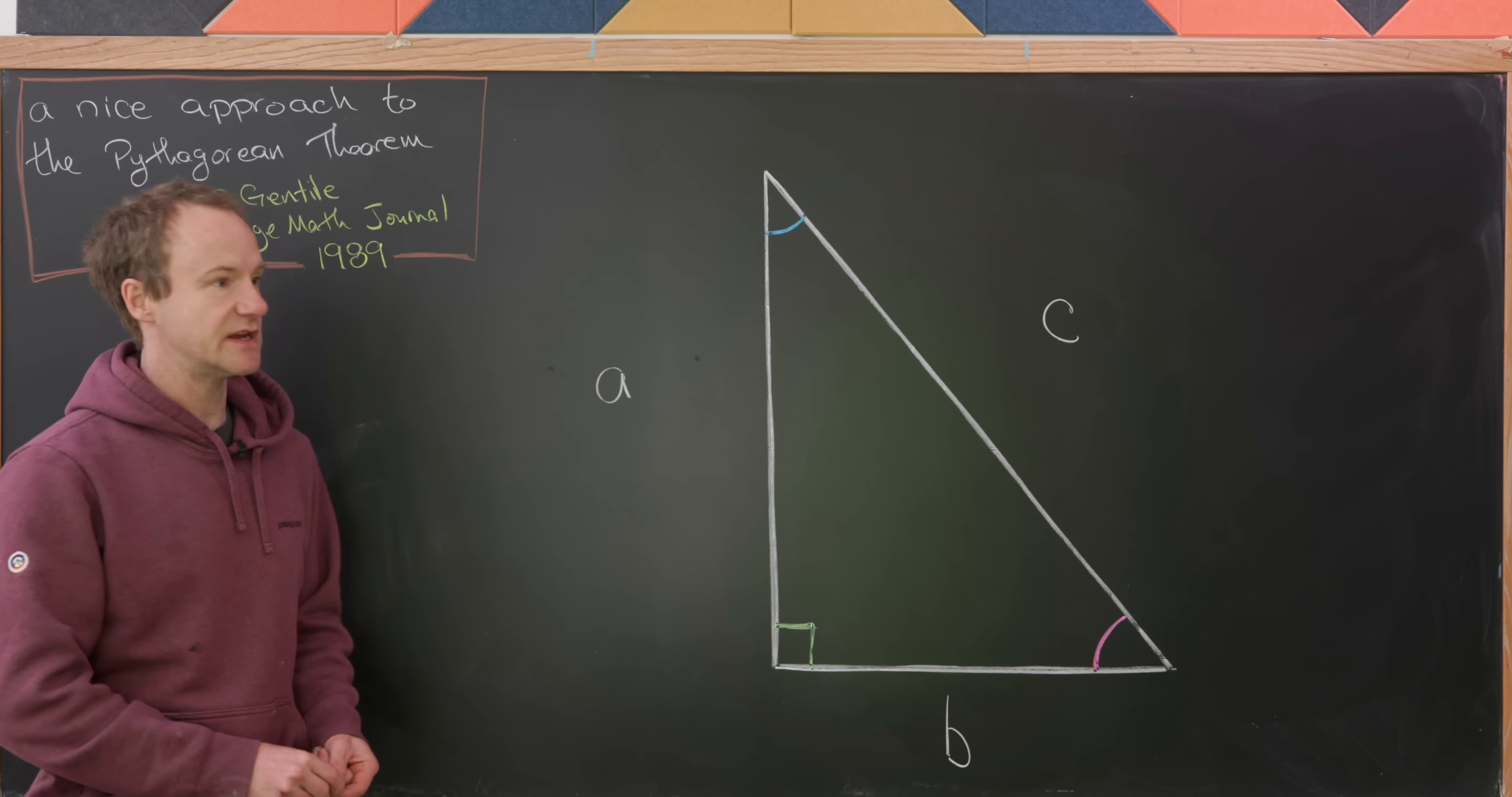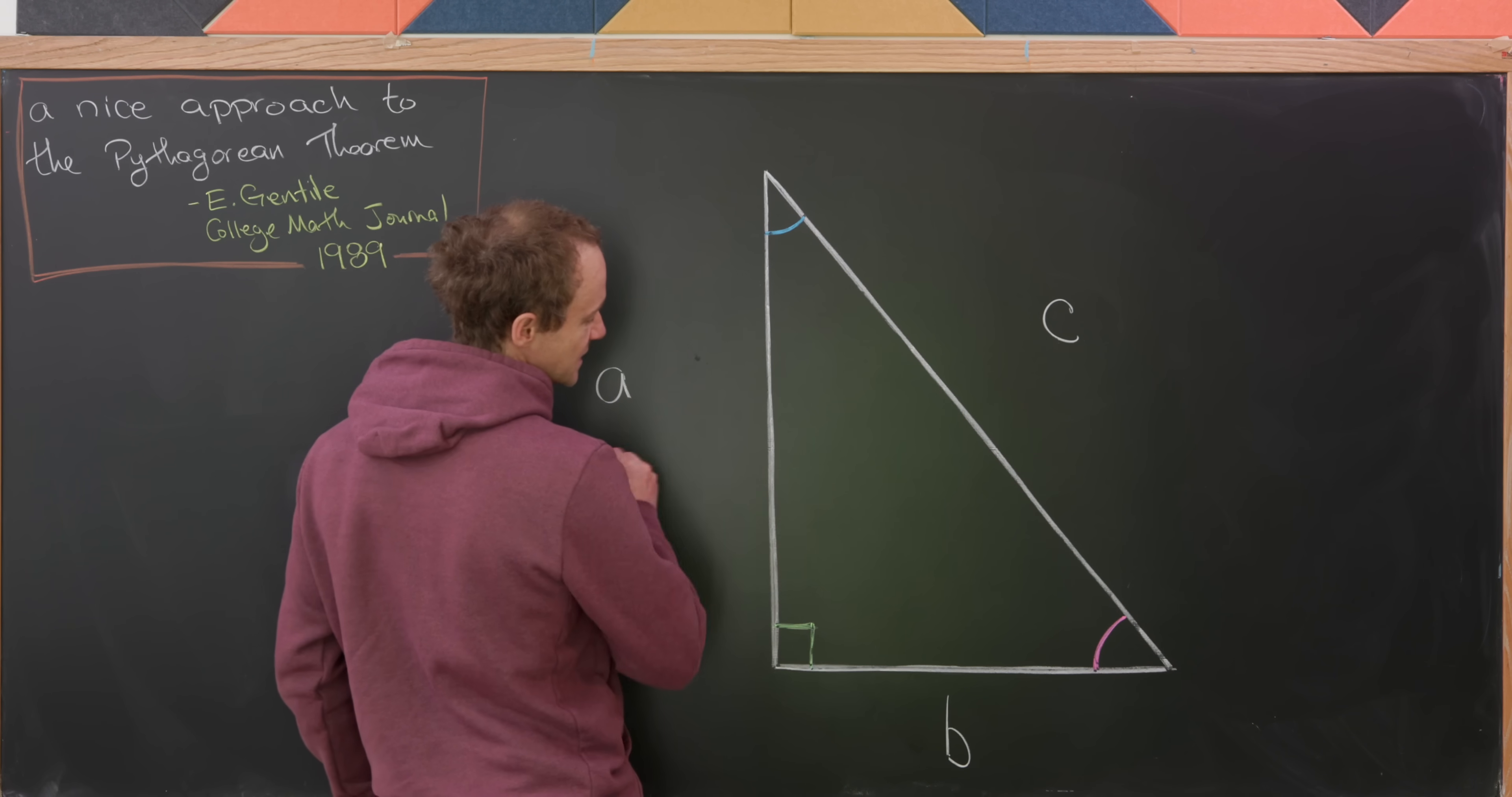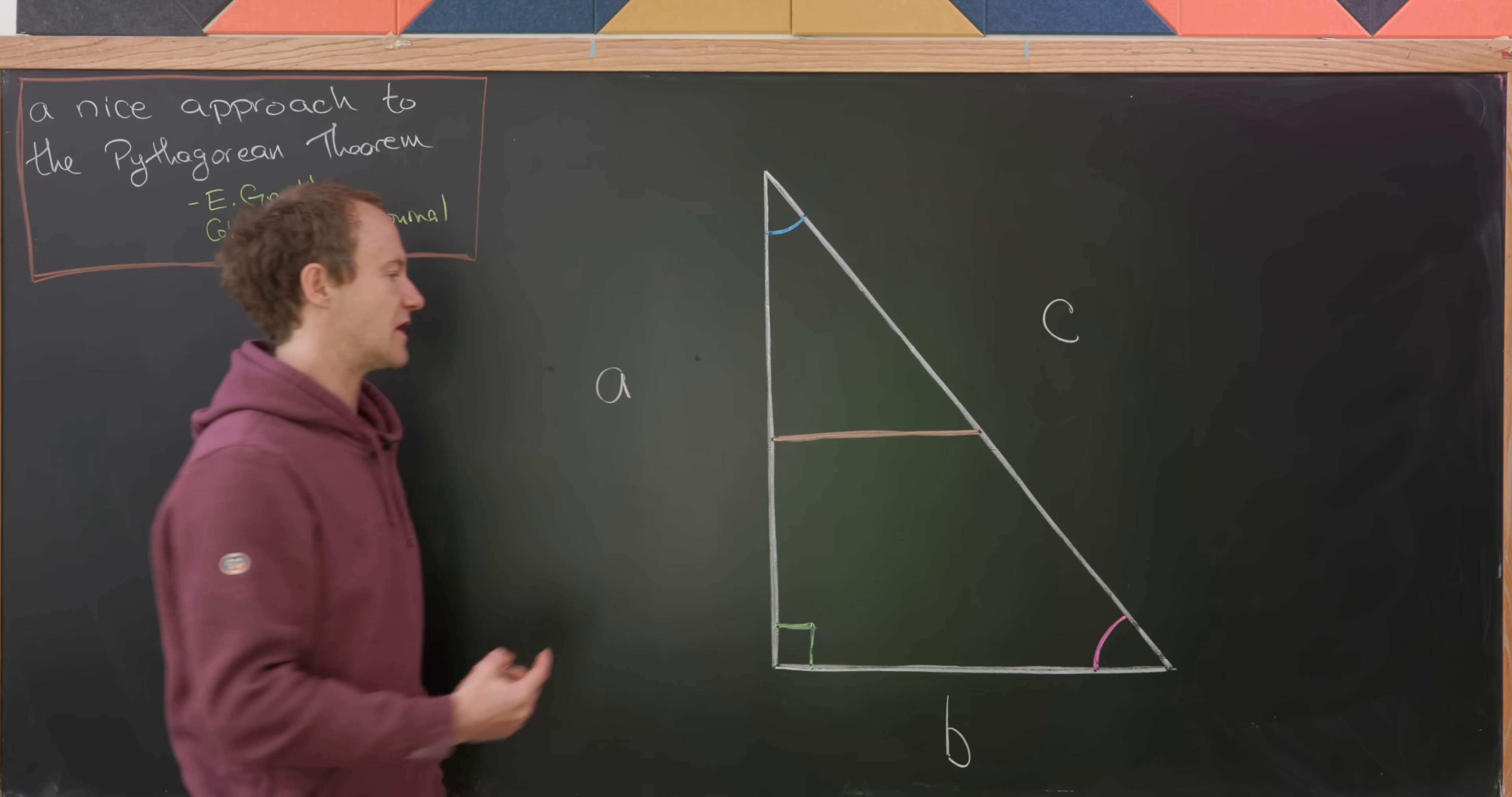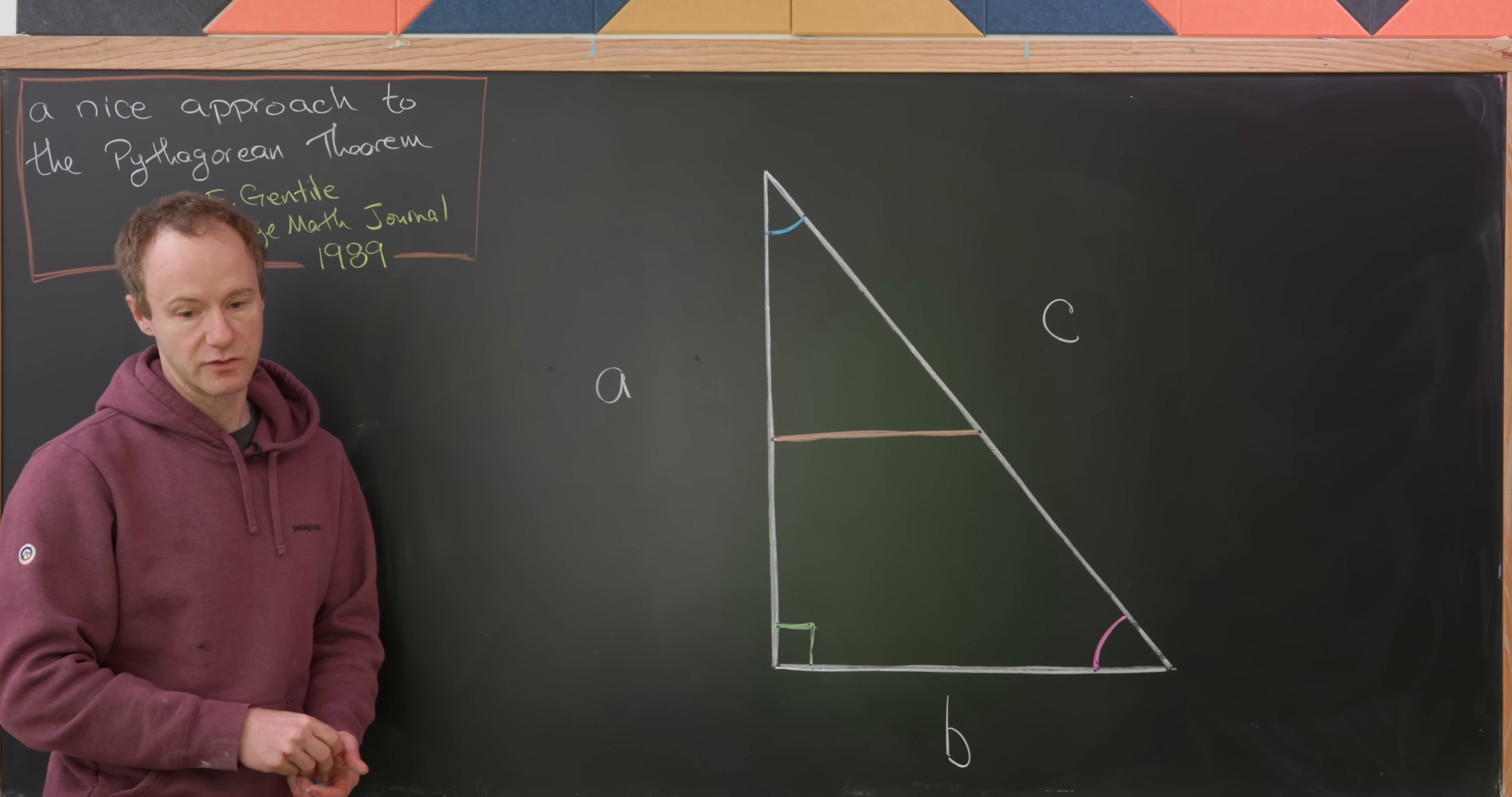Now what I'd like to do is put a line segment that is parallel to this side with side length B. Let's maybe put it right across right here. Although in the back of your mind, you should think that it's kind of small, so it would actually be way up here near the top. But just to make the picture look nice, let's put it right here.